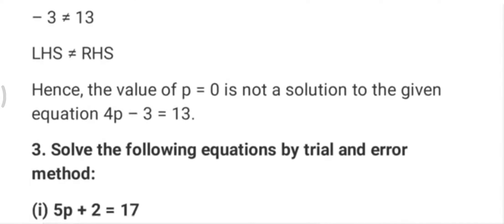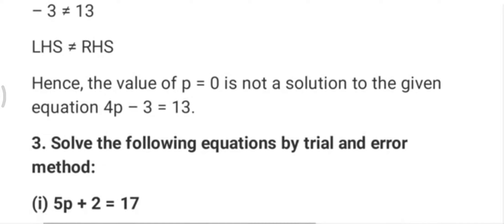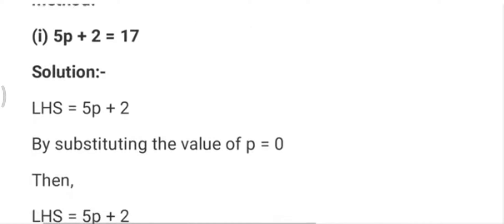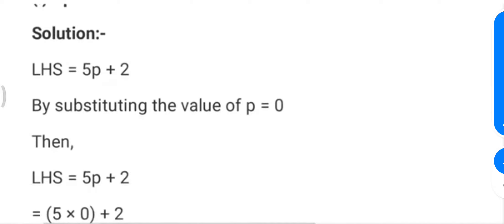Now question number 3: solve the following equations by the trial and error method. In the trial and error method, we put values one by one starting from 0 — then 1, then 2, then 3. Whichever value satisfies the equation is called the solution. First we try 5p+2=17, putting p=0.